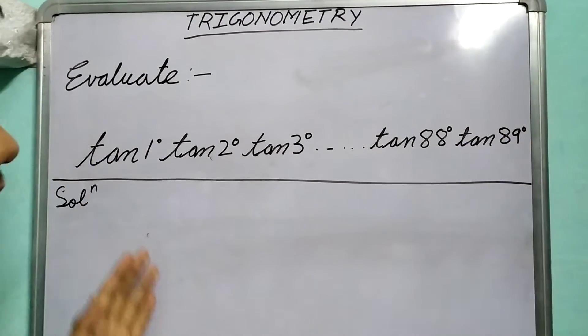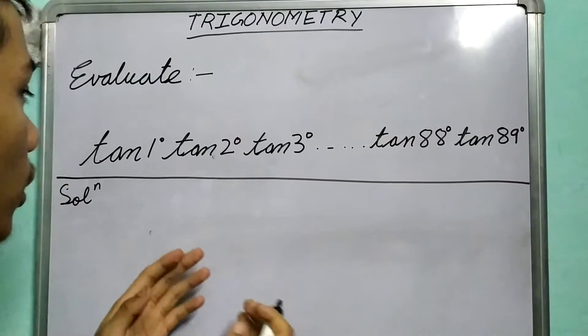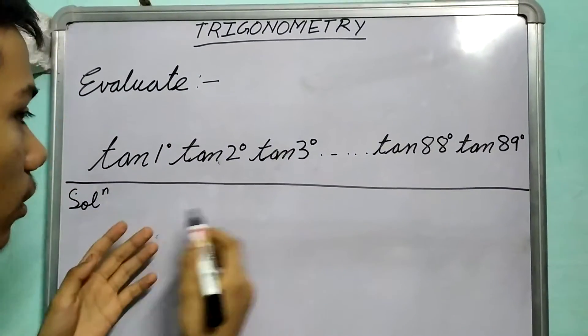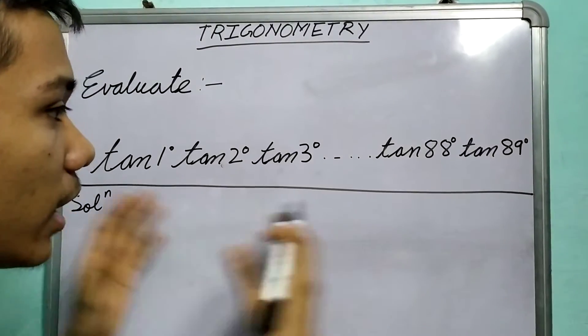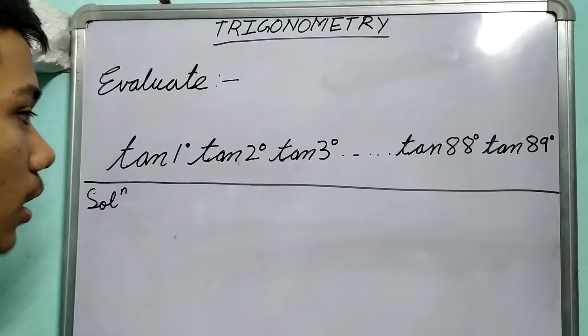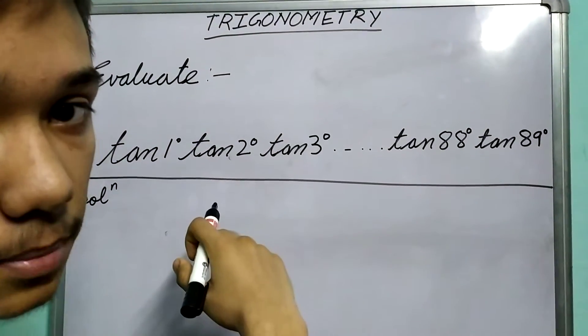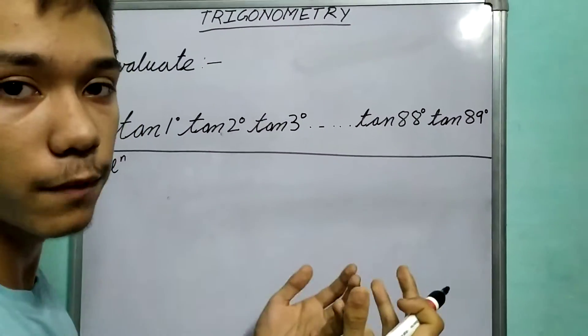So what can we do? Do we know the value of all these? No right, we don't know the value of 1°, 2°, and 3° and so on. And even if we knew, it would be a very tedious task to multiply all of them. So what can we do? Can we rearrange them into some meaningful order?